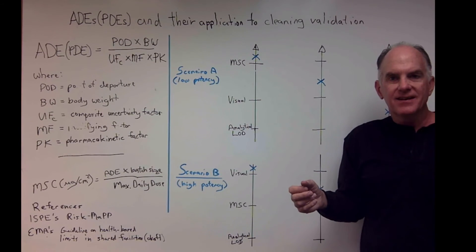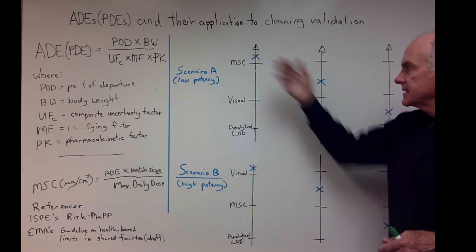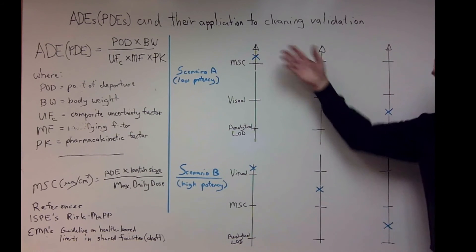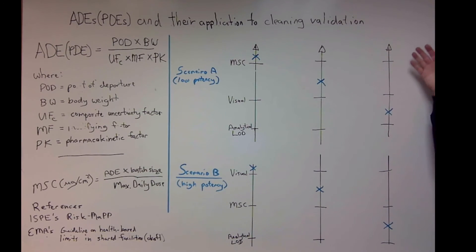Then our final scenario for scenario A is where your cleaning result is below your MSC as well as below the visual and it's above the limit of detection. So this is a good scenario, this is where you want to be. Now I suppose there could be a fourth scenario where you're below your limit of detection, but that would mean you're still okay.